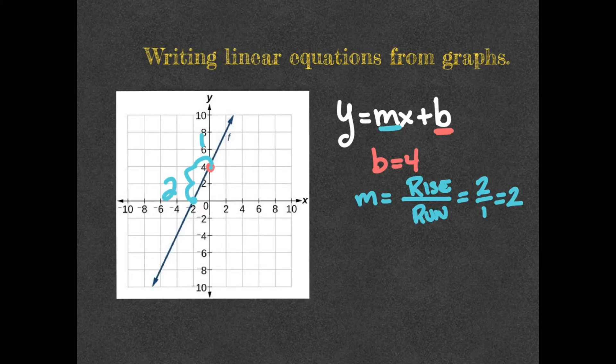So now I'm ready to write my equation. y equals m, which is the slope, and we found that it was 2, x plus b plus 4.